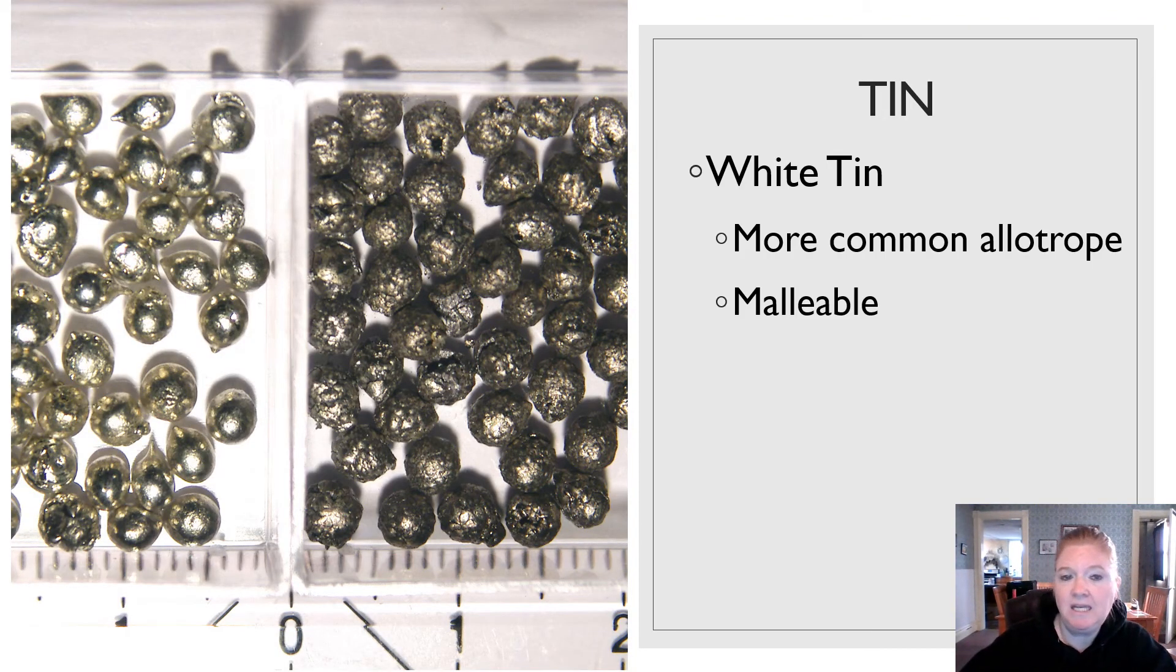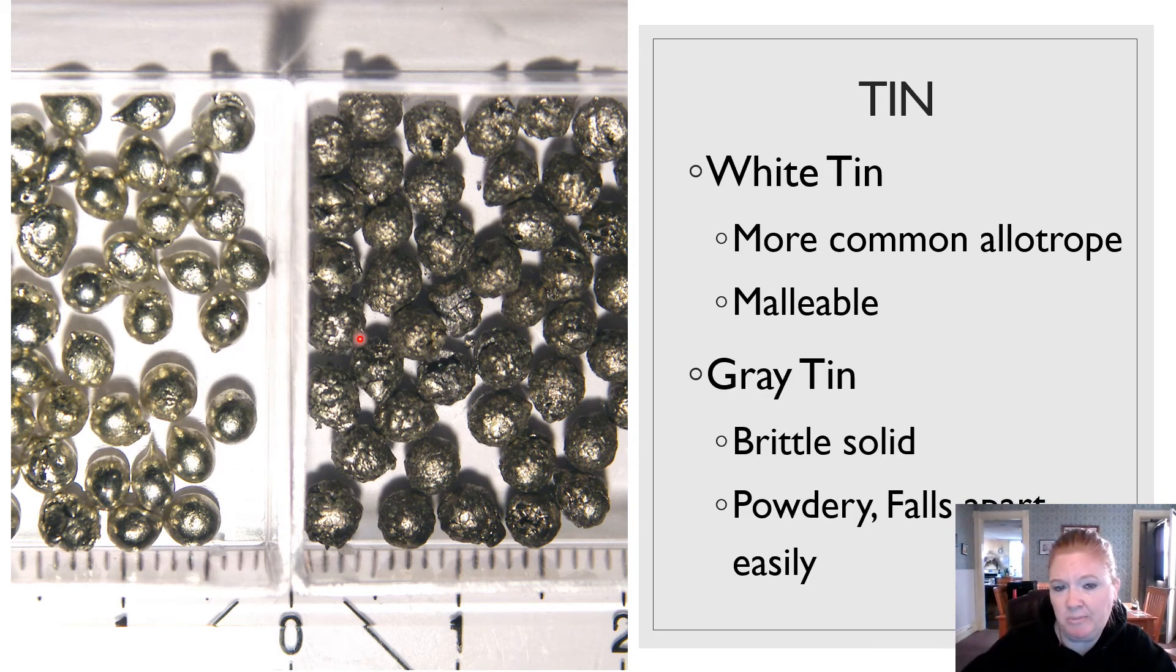We have tin. There's white tin right here. More common, it's malleable. And then we have gray tin. It's a brittle solid. It's powdery. It falls apart easily.